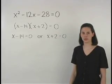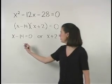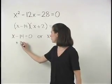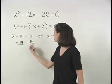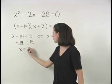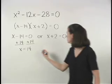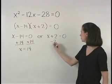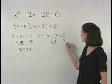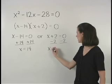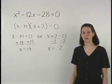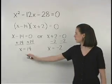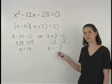Solving each equation from here, we add 14 to both sides of our first equation to get x equals 14. And we subtract 2 from both sides of our second equation to get x equals negative 2. So this equation has two solutions, 14 and negative 2.